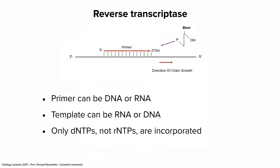Reverse transcriptase was a newly discovered enzyme in the 1970s. Like other nucleic acid polymerases, it copies a template and synthesizes in a 5' to 3' direction. A couple of unusual features: the primer — it needs a primer, and it can be DNA or RNA. The template can also be RNA or DNA. Besides being a reverse transcriptase that copies RNA into DNA, it can also make a copy of DNA. And finally, only deoxy NTPs are incorporated — it makes DNA only, not RNA.